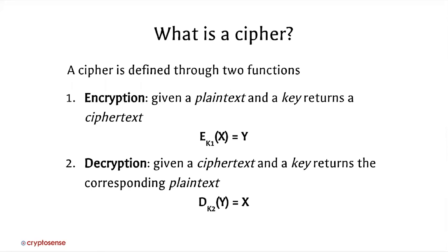So what exactly is a cipher? We define a cipher through two functions. The first is the encryption function, which takes as input a plaintext — that's just the message or data we want to encrypt — and a key. It returns a ciphertext, which is the message in a form that is unreadable to an adversary, at least that's what we hope. So if we encrypt with key one some plaintext x, then we get back some ciphertext y.